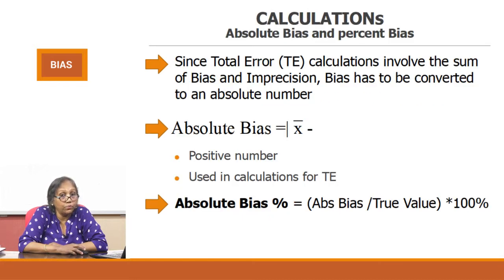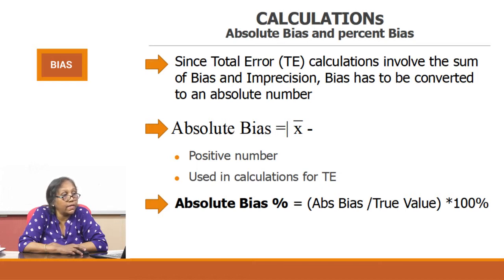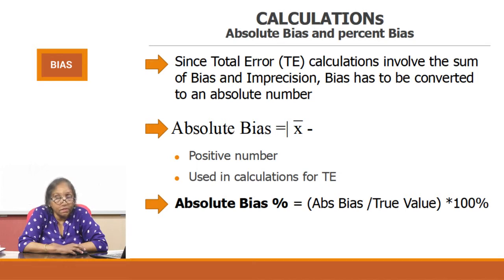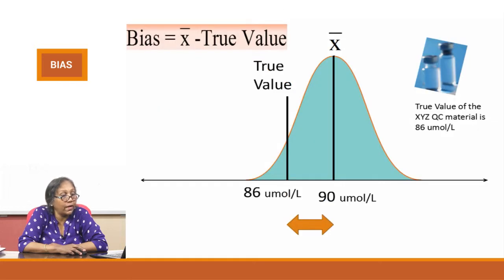Now, the calculation of absolute bias. Two important terms: absolute bias and percent bias. Since total error (TE) calculations involve the sum of bias and imprecision, bias has to be converted into an absolute number. Even if the bias is negative — for example, minus 4 — the absolute bias is equal to 4. Absolute bias percent equals absolute bias divided by the true value, multiplied by 100, to convert it into a percent. The denominator here is the true value.